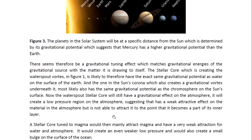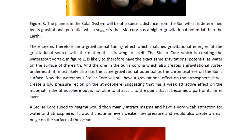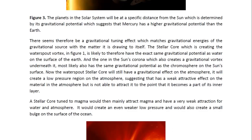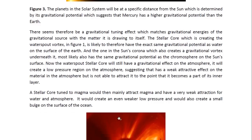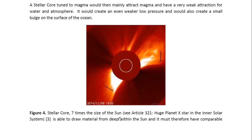The stellar core which is creating the water spout vortex in Figure 1 is likely to have the exact same gravitational potential as water on the surface of the Earth. And the one in the Sun's corona, which also creates a gravitational vortex underneath it, most likely also has the same gravitational potential as the chromosphere on the Sun's surface. The water spout stellar core will still have a gravitational effect on the atmosphere — it will create a low pressure region — suggesting that it has a weak attractive effect on the material in the atmosphere, but is not able to attract it to the point that it becomes part of its inner layer. A stellar core tuned to magma would then mainly attract magma and have a very weak attraction for water and atmosphere. It would create an even weaker low pressure and would also create a small bulge on the surface of the ocean, but it would never draw it in a gravitational vortex like the water spout stellar core does.